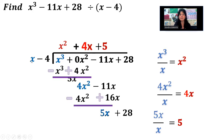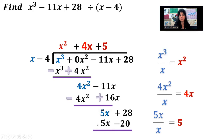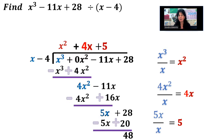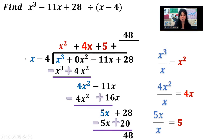5 times x is 5x. 5 times negative 4 is minus 20. Draw my line to subtract, run the negative all the way through — so this is going to be negative, and that will be positive. Combine: 5x minus 5x is nothing. 28 and 20 make 48. This time we have a remainder. When you have a remainder, you're going to add on the extra — so we're going to have plus 48 over, and whatever your divisor is out here, that is the denominator. And we have our final answer.